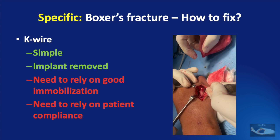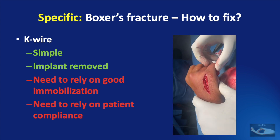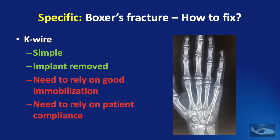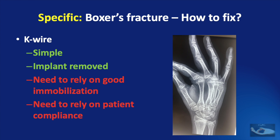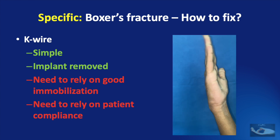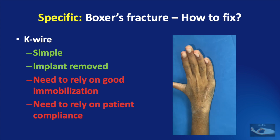K-wire fixation can also be used in these fractures. They are simple and the implant can be removed, but we need to rely on good immobilization — keeping the metacarpophalangeal joint in 90 degrees — and patient compliance. Here the fracture is being reduced and fixation has been done, making sure the metacarpophalangeal joint is free. This is the healing of the fracture, and this shows complete flexion at the metacarpophalangeal joint of the little finger with normal knuckle prominence.